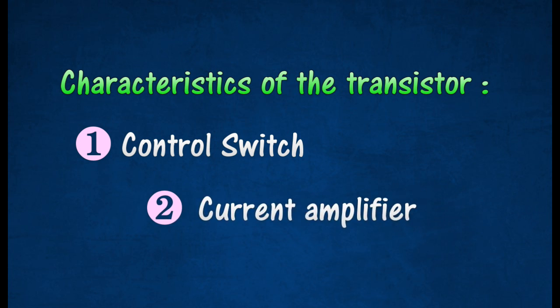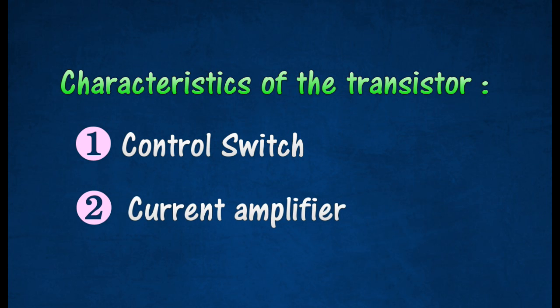A small current in the base emitter circuit allows a larger current to flow in the collector emitter circuit. Thus, transistor can be used as a current amplifier.